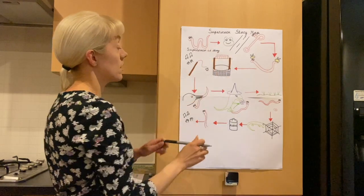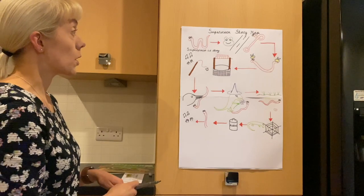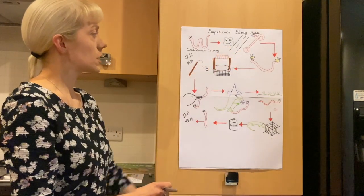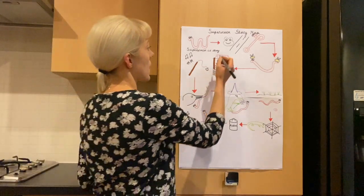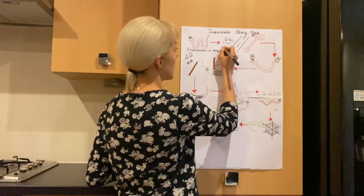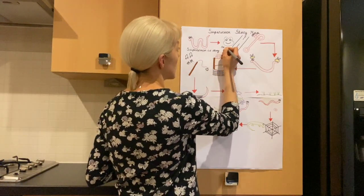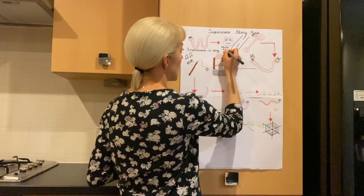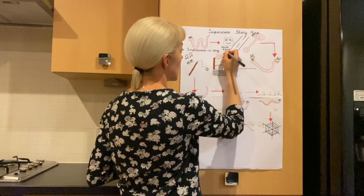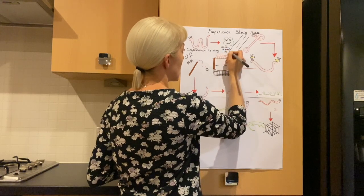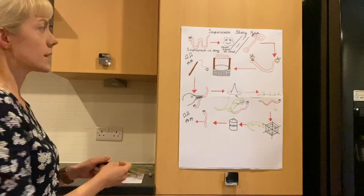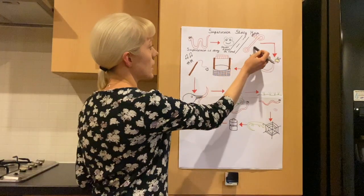And then Superworm saves Toad on the road, doesn't he? So we'll label it there. And he saved him with a lasso, so we better label the lasso here so we'll remember.